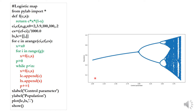Next, we create a list of control parameter values between an initial value ci and a final value cf. We generate 1000 control parameter points between 2.5 and 3.8. We also define the number of iterations n and g, and set the initial population x0, which must be between 0 and 1.